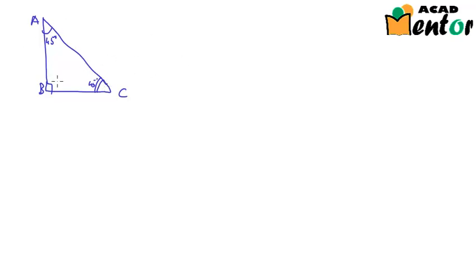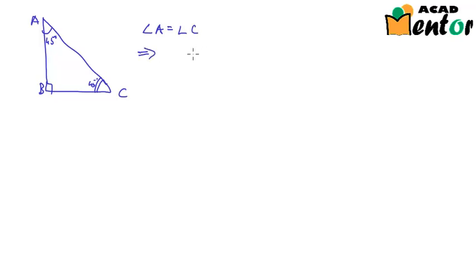By the angle sum property, angle A plus B plus C equals 180 degrees, so if angle A is 45 degrees, angle C must also be 45 degrees. In an isosceles triangle, the sides opposite equal angles are equal, so since angle A equals angle C, we can say AB equals BC. Let us assume AB and BC are both A units.